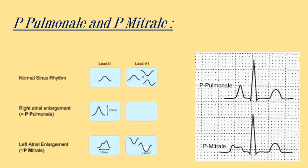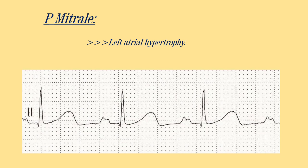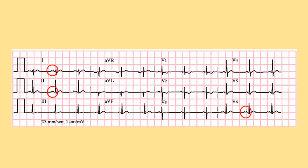The P wave represents atrial depolarization — normally 2.5 mm in height and 120 milliseconds in width. In cases of atrial enlargement, the P wave shape changes. In right atrial enlargement, the P wave gets taller and is called P-pulmonale. In left atrial enlargement, it gets wider and is called P-mitrale. P-mitrale occurs in left atrial hypertrophy seen in mitral stenosis — the P wave is wider with a notch, looking like an M shape, visible in leads 1, 2, and V6.